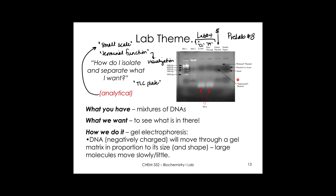Supercoiled plasmid refers to a plasmid that is twisted on itself — not an open loop, but more like a coiled rod — which affects how it migrates on a gel.